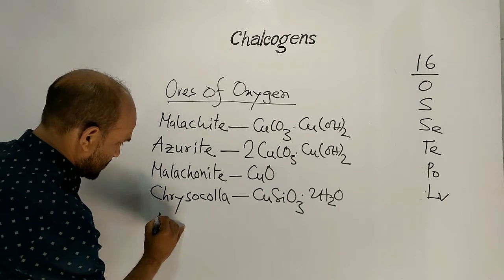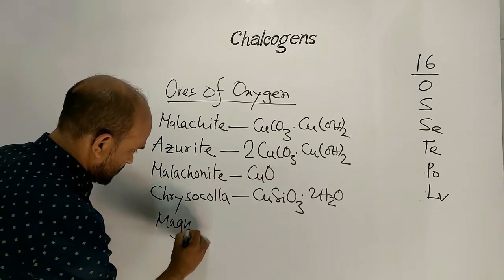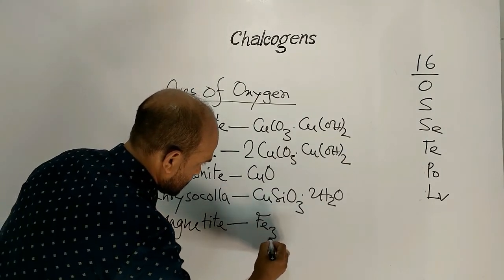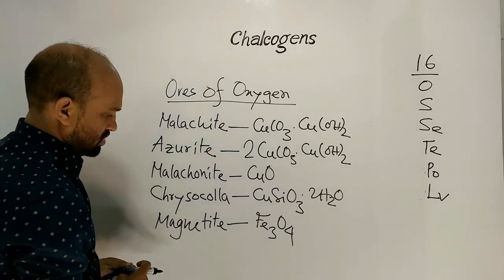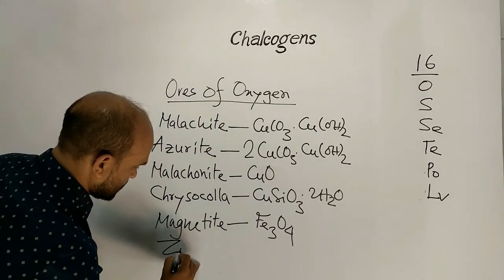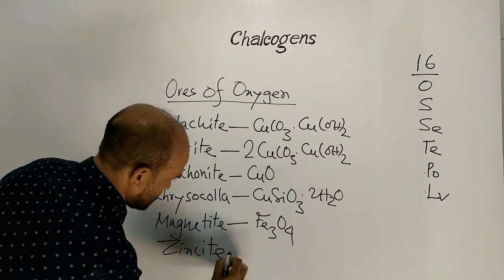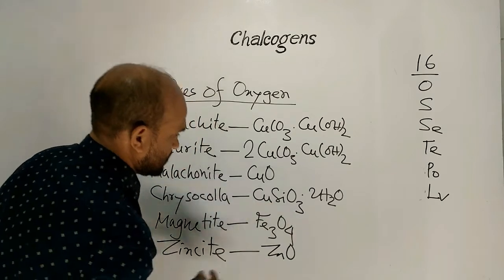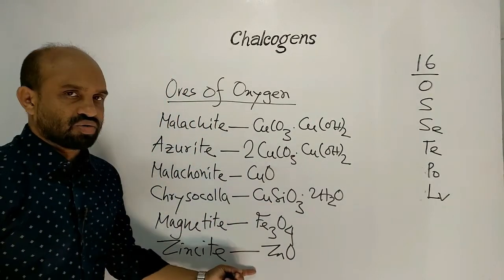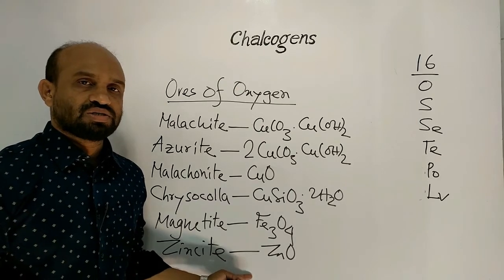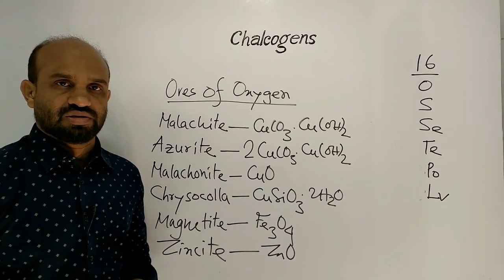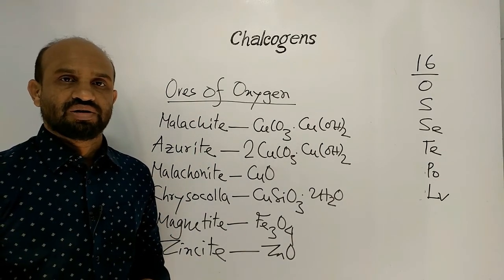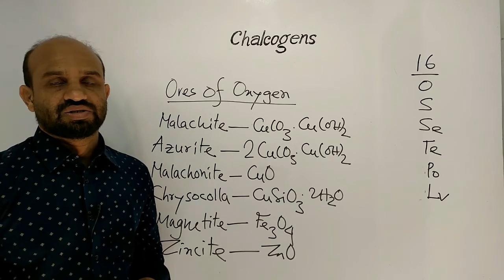Ores of Oxygen continued: Magnetite, which is Fe₃O₄. Then Zincite, formula is zinc oxide (ZnO). These are the ores where Oxygen remains present as a component. That is why Oxygen is called an ore-forming element, meaning a kind of Chalcogen.